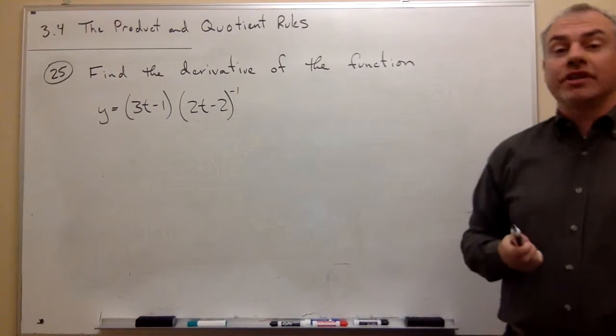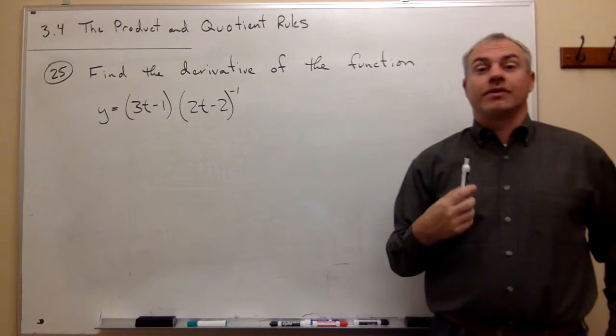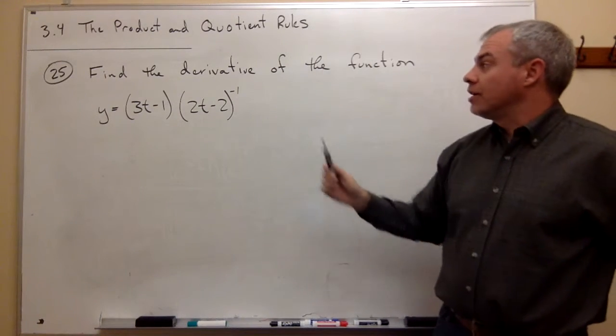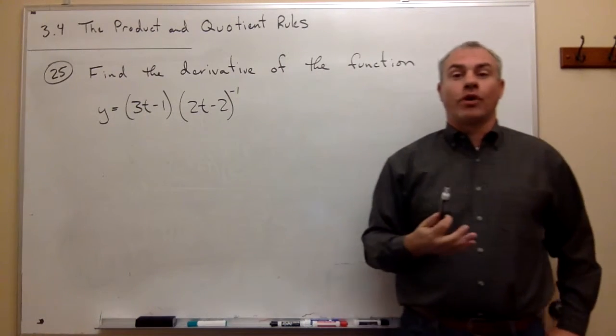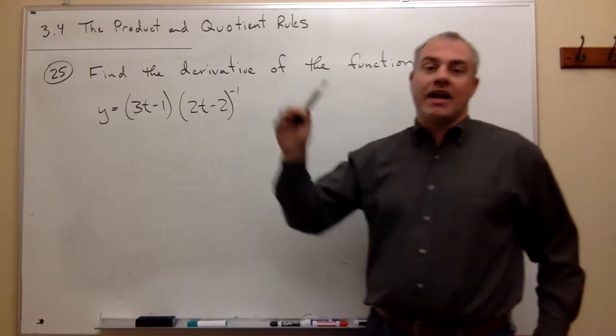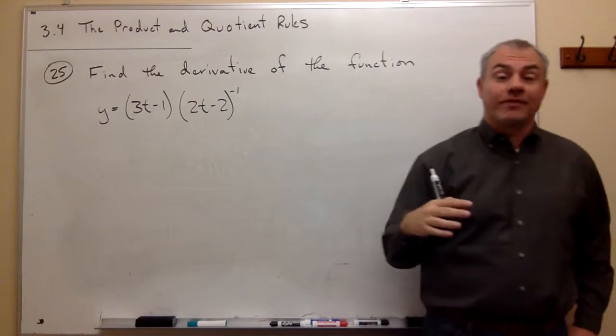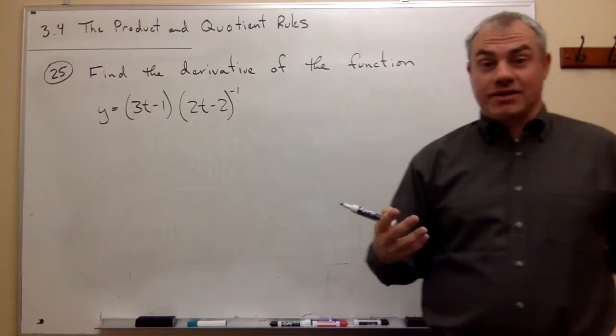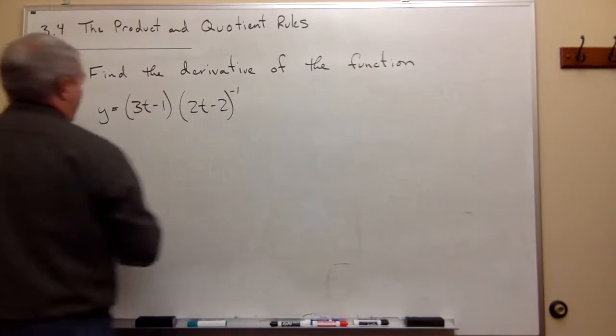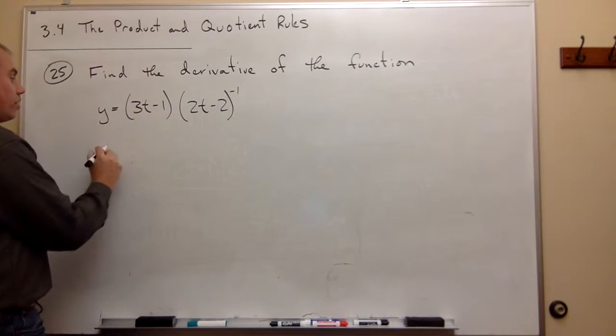Now, this is actually a problem that is going to be useful to use the quotient rule on, but it's just not in the right form yet. So when I have 2t minus 2 to the negative 1, that actually could be written on the bottom of the fraction to the positive 1 power. So let's just start out by rewriting this function. So instead of writing it this way, I want to write it this way.